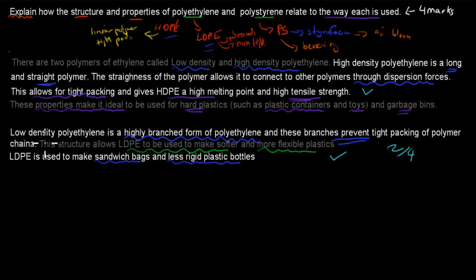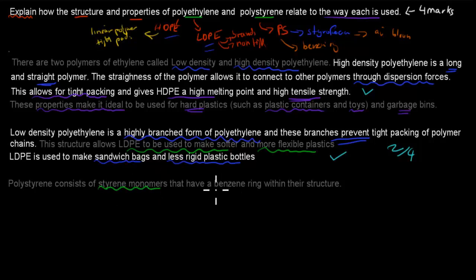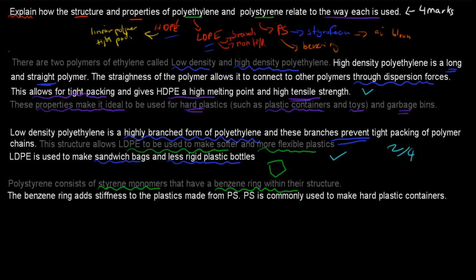But we still have to talk about styrene as well - styrofoam and polystyrene. Polystyrene consists of a styrene monomer that has a benzene ring within their structure. You remember that benzene ring was that big ring there. All of them have that for their polystyrene. The benzene ring adds stiffness to the plastics made from polystyrene. So that's one of its properties - it increases its stiffness.